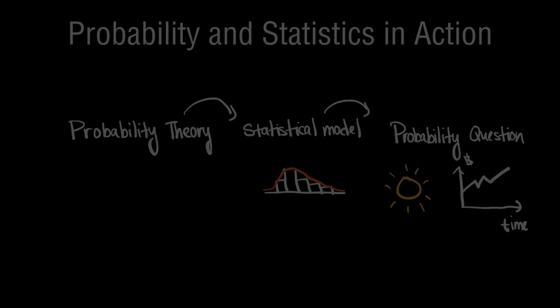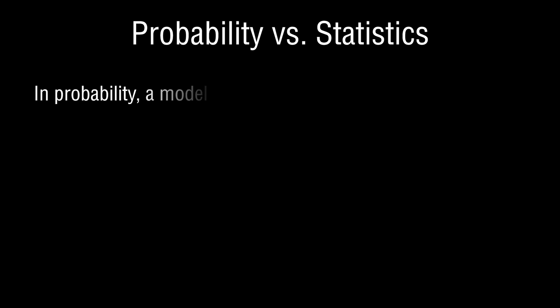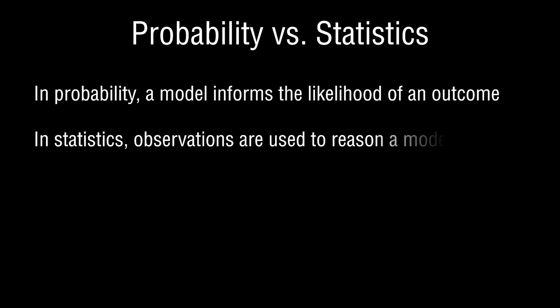And so I hope this video clarifies the differences between probability and statistics. And if you ever forget, remember the marbles and the jar. For probability, the model—i.e., the contents of the jar—is known, and we want to estimate the likelihood of some outcome of interest. In statistics, we have some observations, so some marbles have been picked, and we use that to infer what is in the jar.